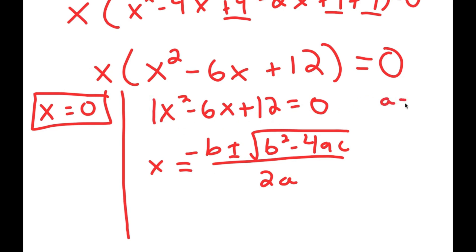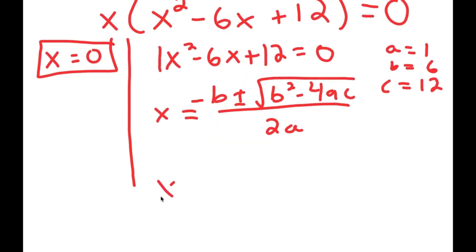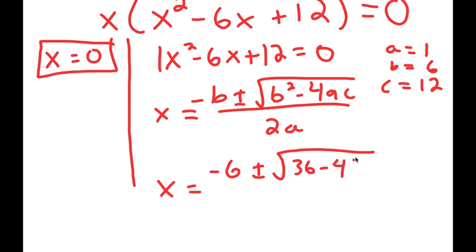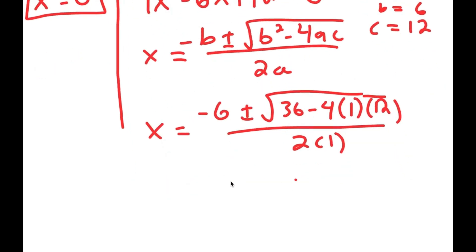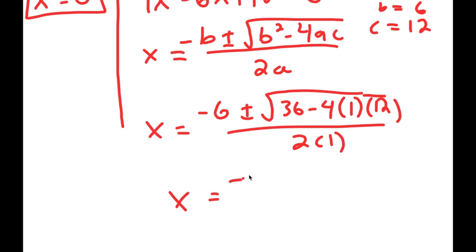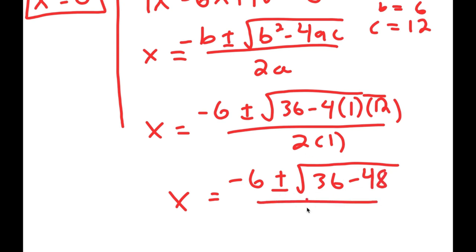So in this case, a is 1, b is 6, and c is 12. If I plug these values into the quadratic formula, I get negative 6 plus or minus the square root of b squared — so 6 squared, which is 36 — minus 4 times a, which is 1, times c, which is 12, all over 2a, so 2 times 1.